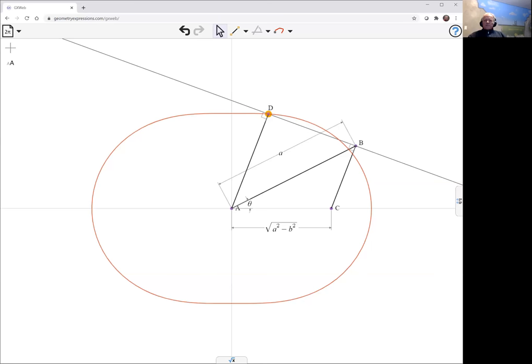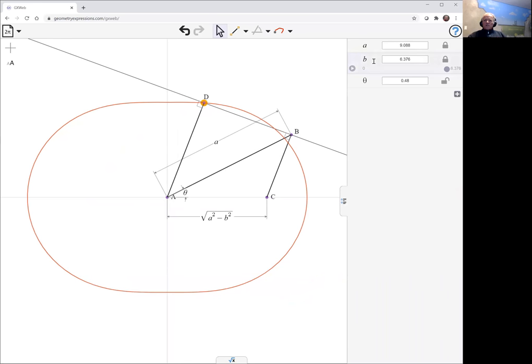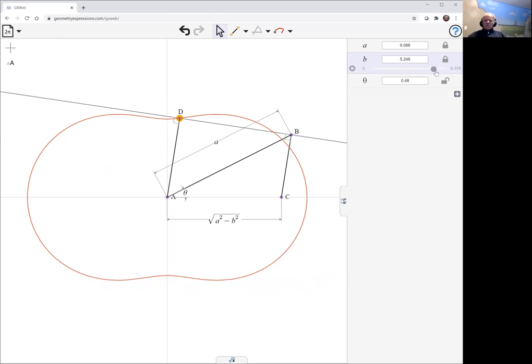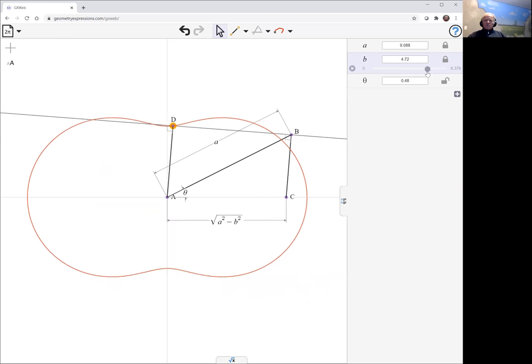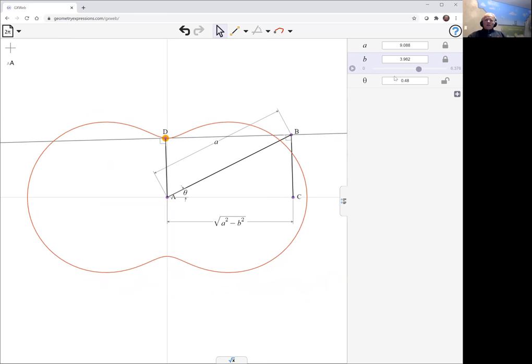We're going to look at that depending on the relative size of B and A, it has a different look to it, a bit more pinched. Now, so that's the curve traced by D.